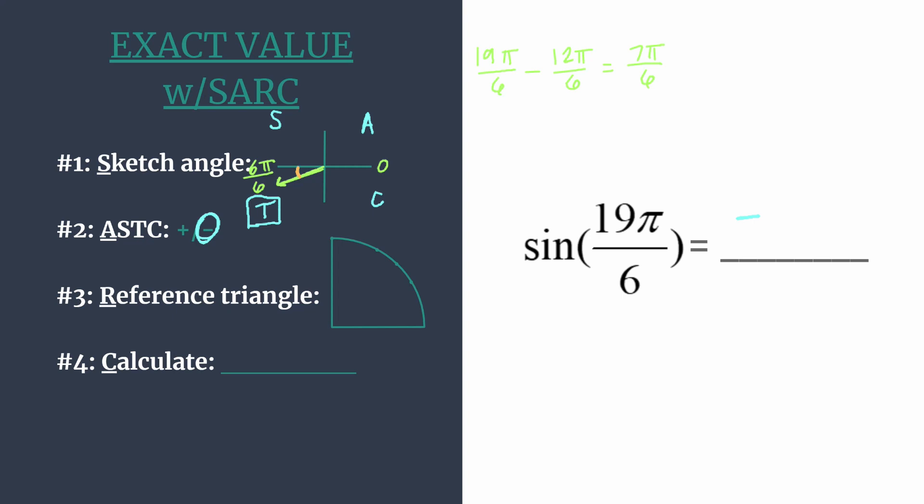So that reference angle must be 1π over 6. And π over 6 is the same as 30 degrees, so we know we should be working with our 30-60-90 triangle. That's a special right triangle, and you can use your knowledge of a special right triangle to know the coordinates of that special right triangle.